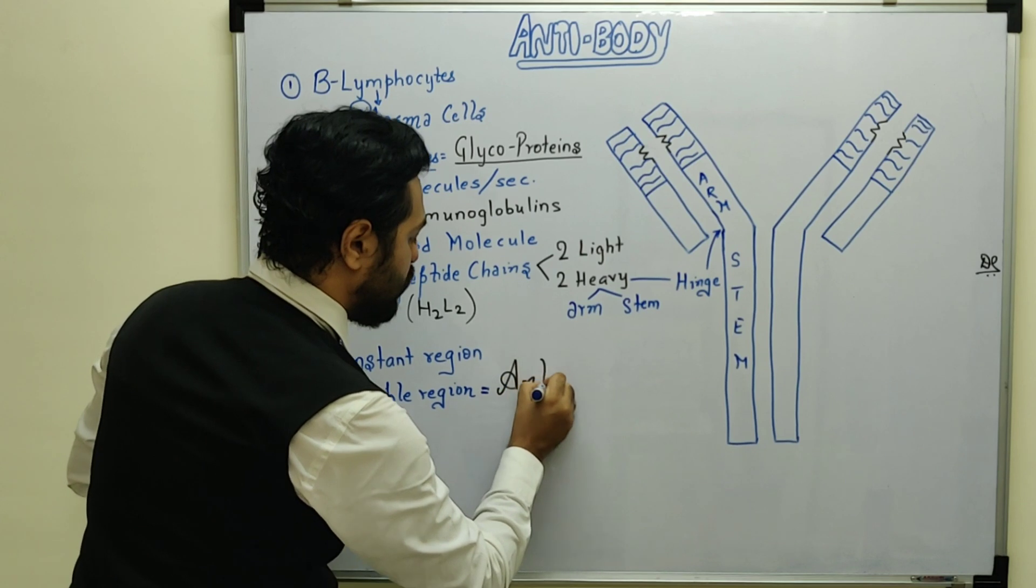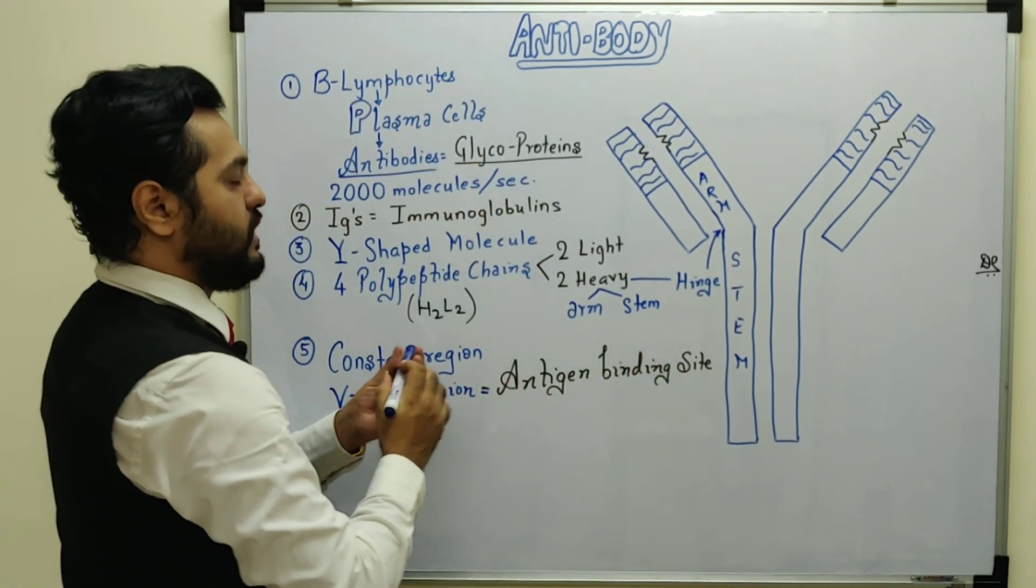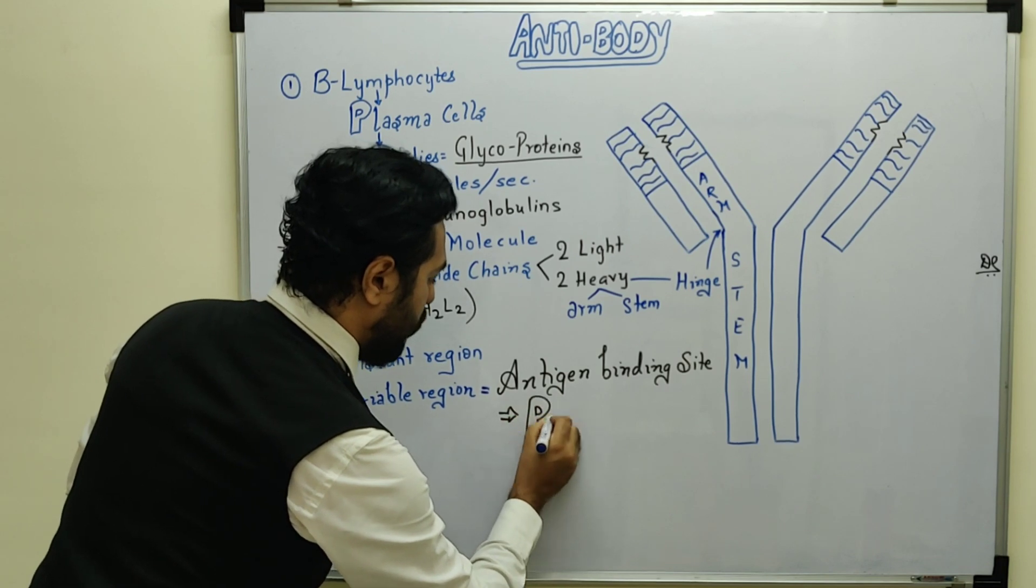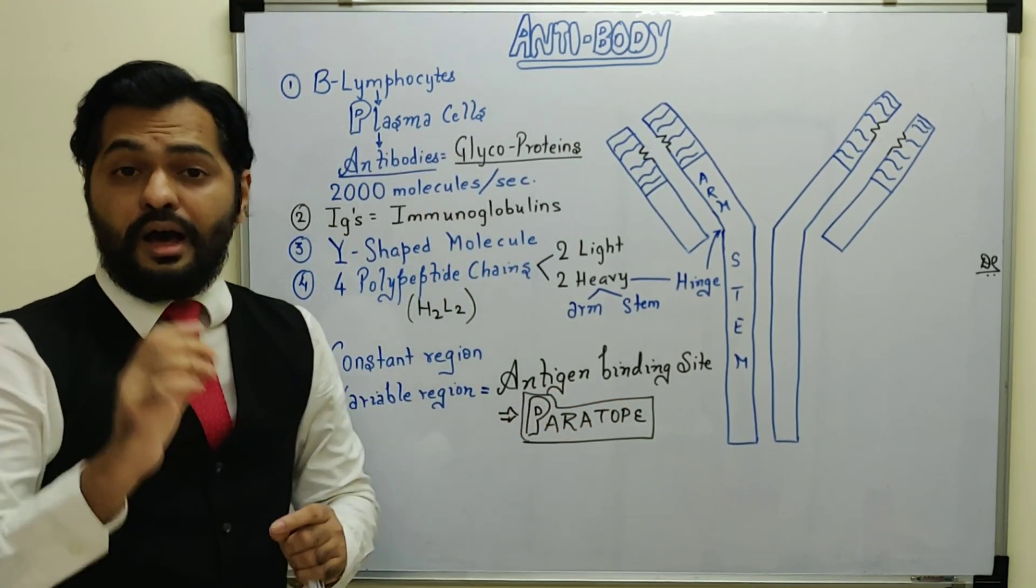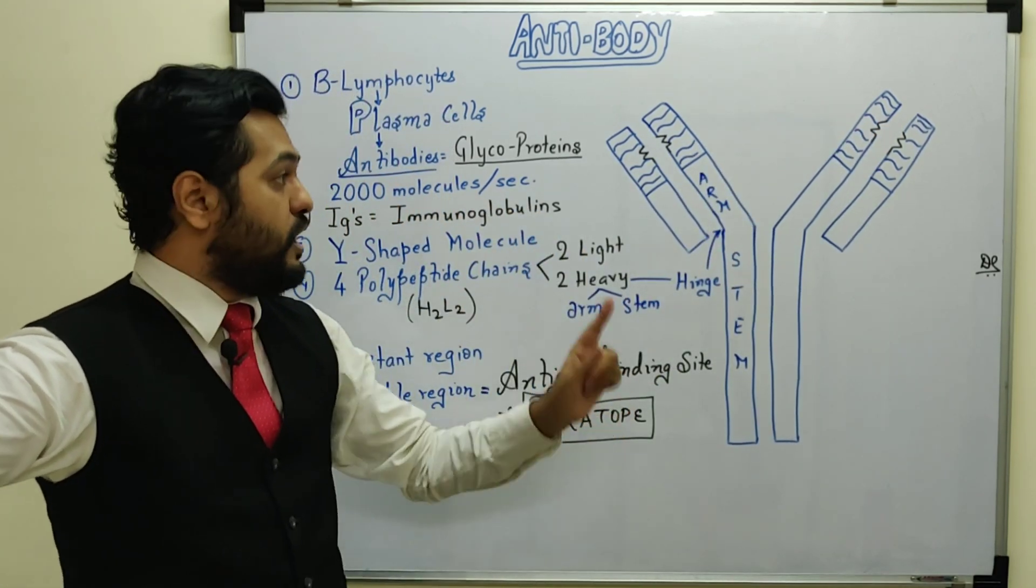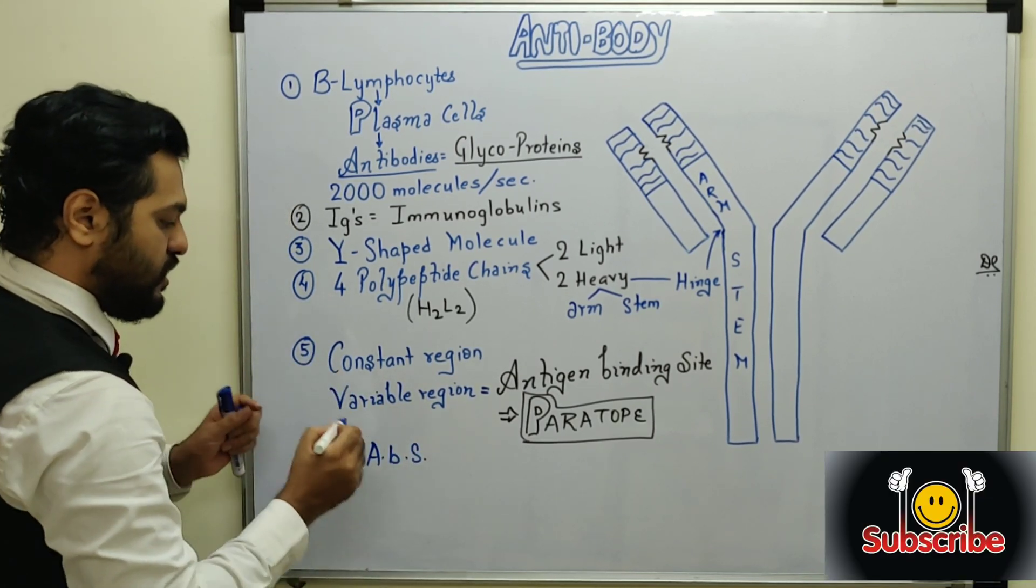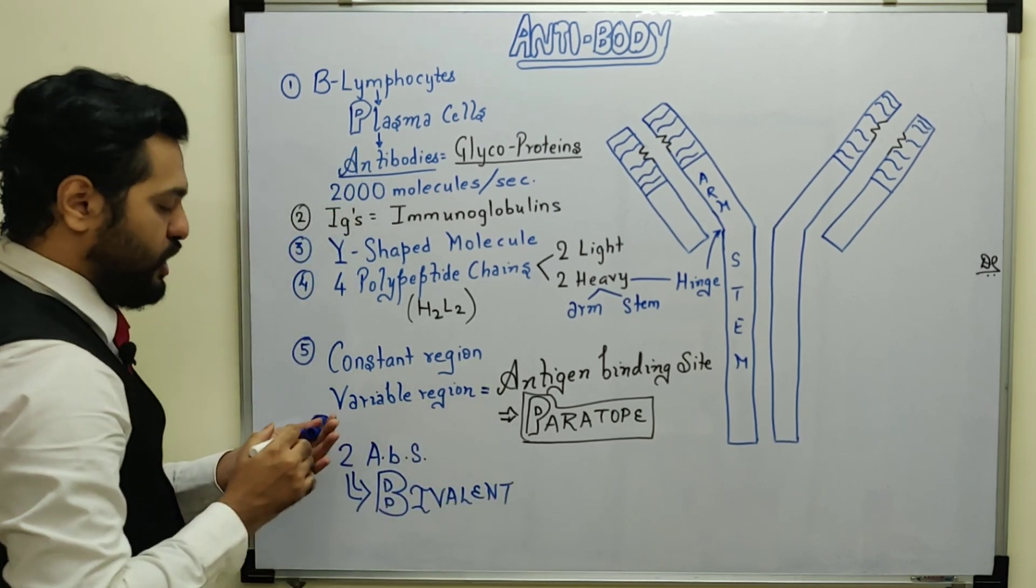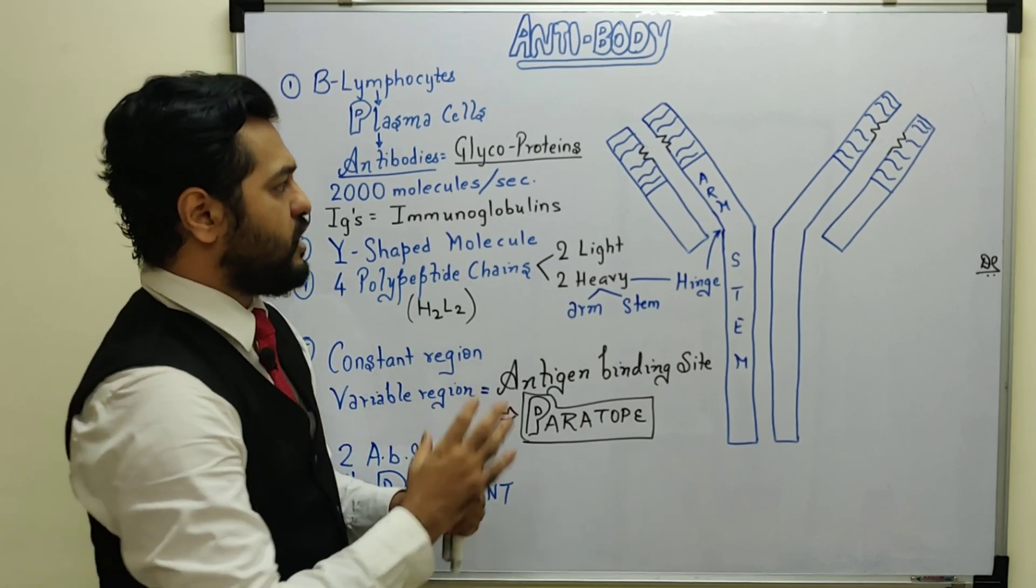This variable region has sites known as the antigen binding site, also called paratope. The antibody was made by plasma cells stimulated by B lymphocytes against a specific antigen. Since there are two antigen binding sites, we call it bivalent.